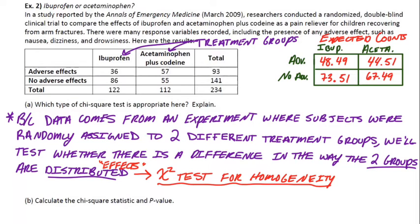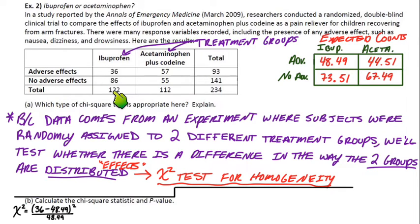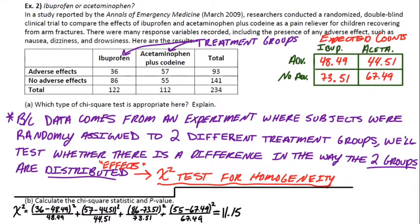I've added the expected counts in here with the observed counts. Part B asks us to calculate the chi-square statistic and p-value. We can do that by hand. We'll start with 36, subtract the expected count, square it, divide by the expected. Then 57 minus the expected count, square it, divide by the expected. Then 86, then 55. We should be at 11.15 for our chi-square test statistic.